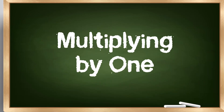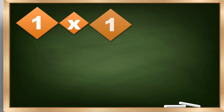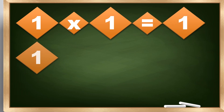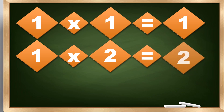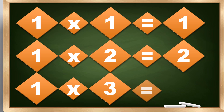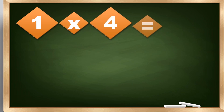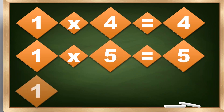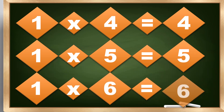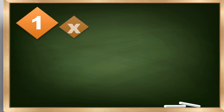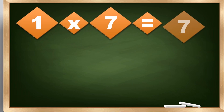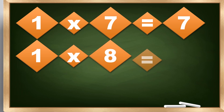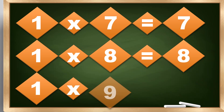Multiplying by 1. 1 times 1 equals 1. 1 times 2 equals 2. 1 times 3 equals 3. 1 times 4 equals 4. 1 times 5 equals 5. 1 times 6 equals 6. 1 times 7 equals 7. 1 times 8 equals 8. 1 times 9 equals 9.